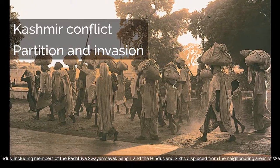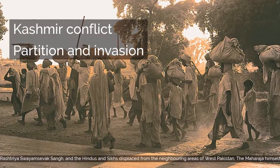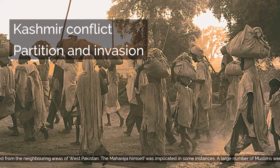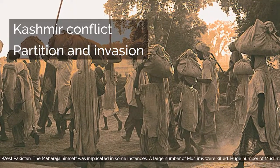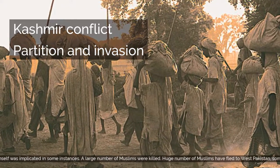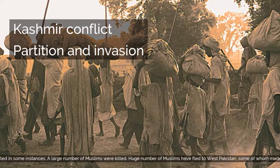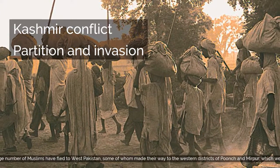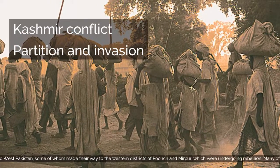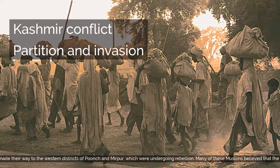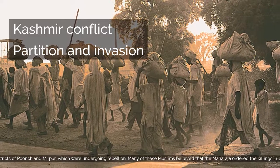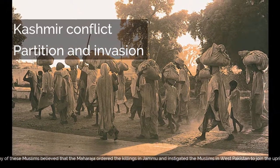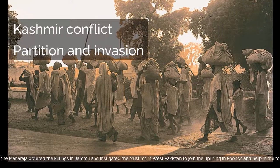Many of these Muslims believed that the Maharaja had ordered the killings in Jammu, and this instigated Muslims in West Pakistan to join the uprising in Punjab and help in the formation of the Azad Kashmir government. The rebel forces in the western districts of Jammu got organized under the leadership of Sardar Ibrahim, a Muslim Conference leader. They took control of most of the western parts of the state by 22 October. On 24 October, they formed a provisional Azad Kashmir — free Kashmir — government based in Palandri.